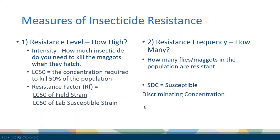There are two sides to resistance. One is the resistance level — how much insecticide do you need to kill the maggot. The measure we use to compare all strains is known as the LC50, which is the concentration required to kill 50% of that population. When we've calculated the LC50 for a field strain, we can determine a resistance factor by dividing that LC50 by the LC50 of a strain here in the laboratory that is completely naive to insecticide and susceptible to everything — this is our baseline.